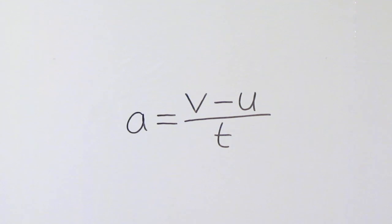Lastly, for acceleration, this V minus U on top of the fraction just means how much the velocity has changed. See my other video on acceleration for a more detailed explanation.